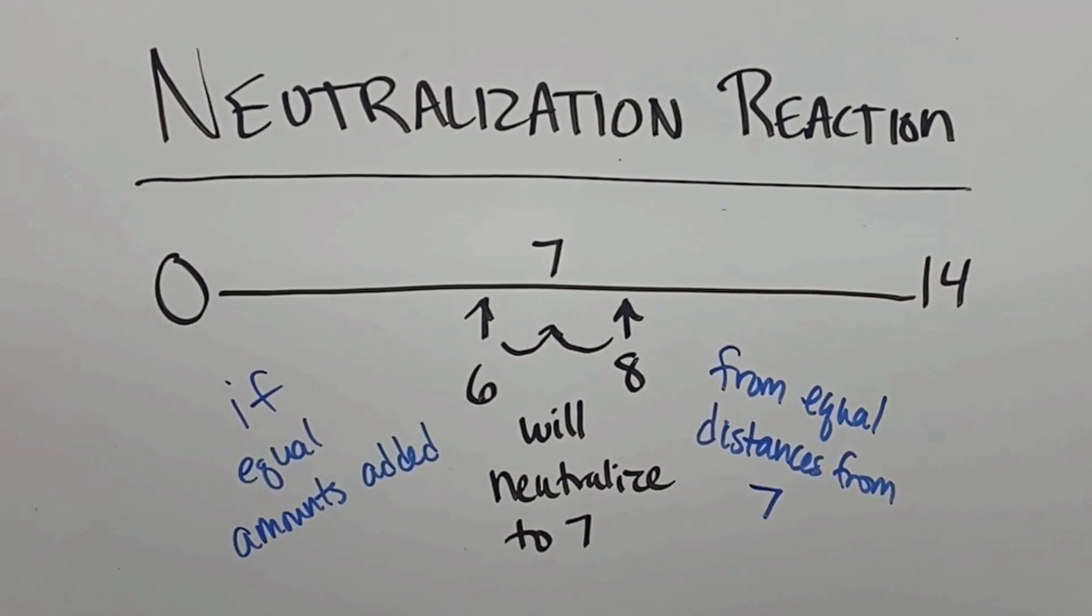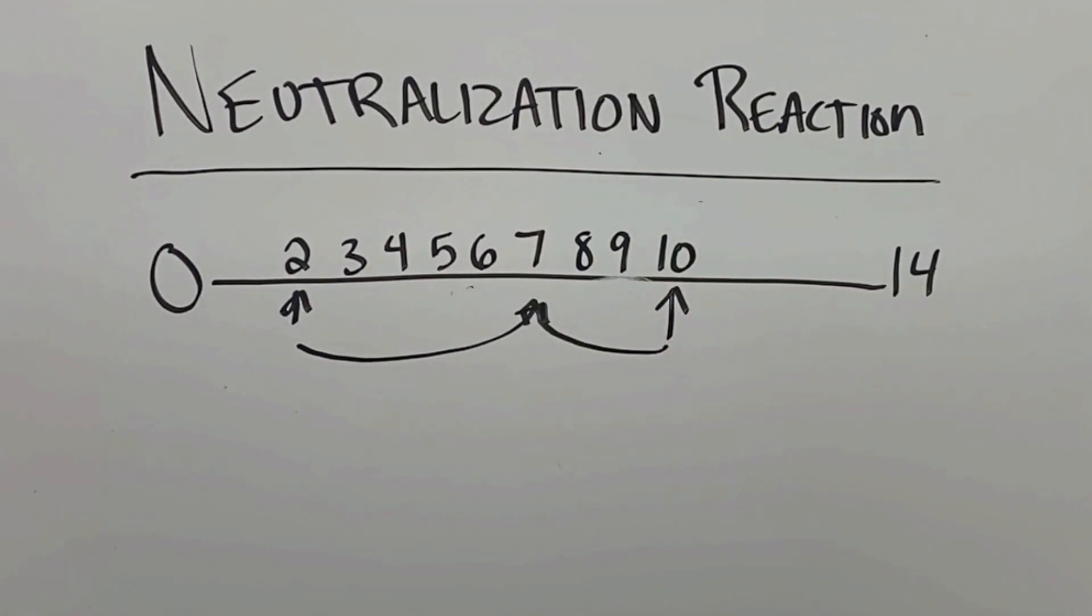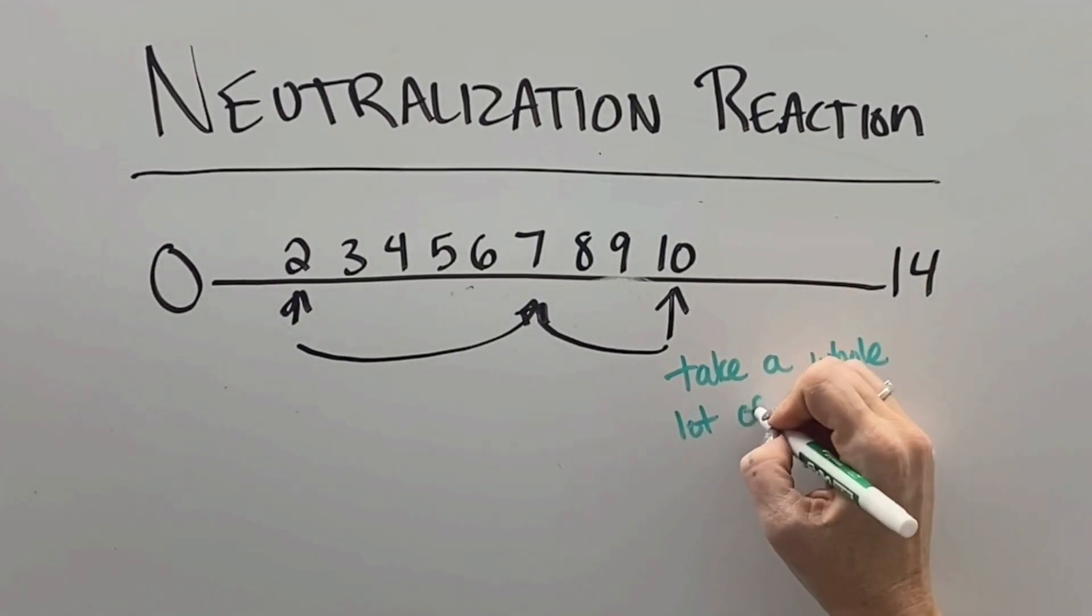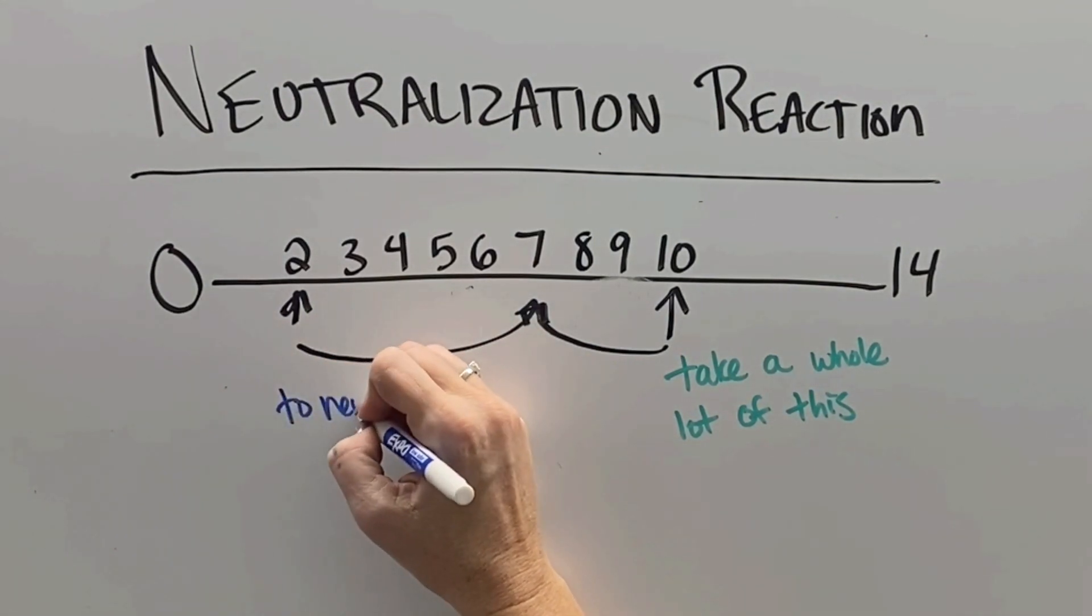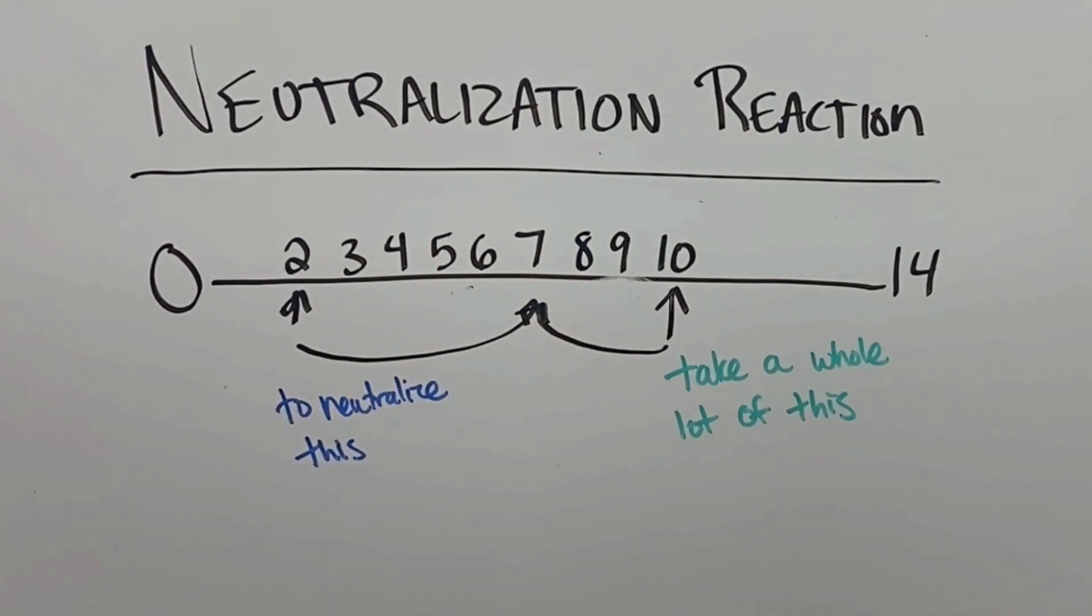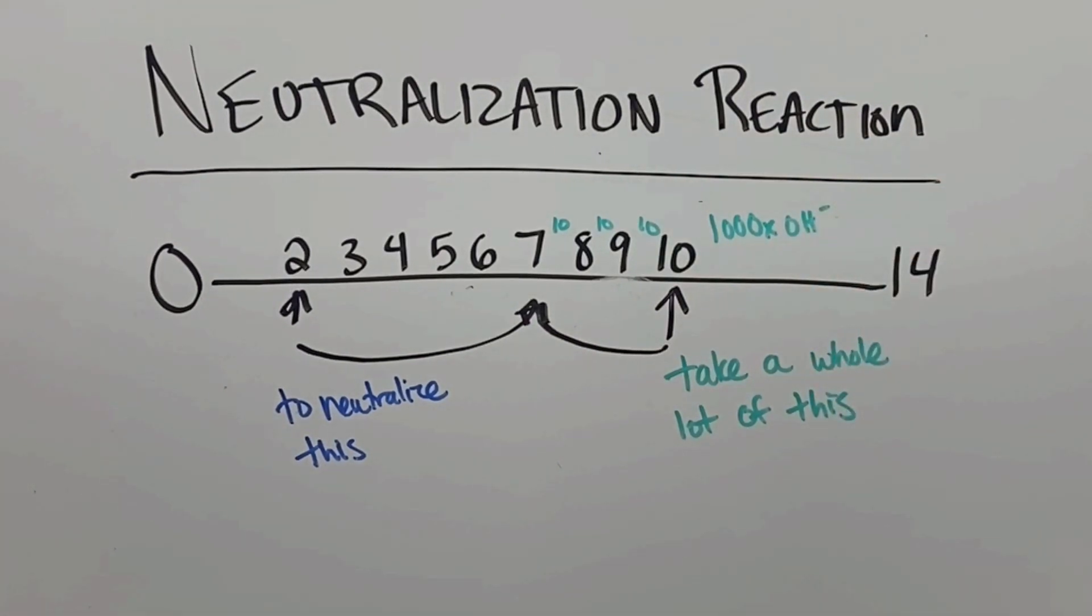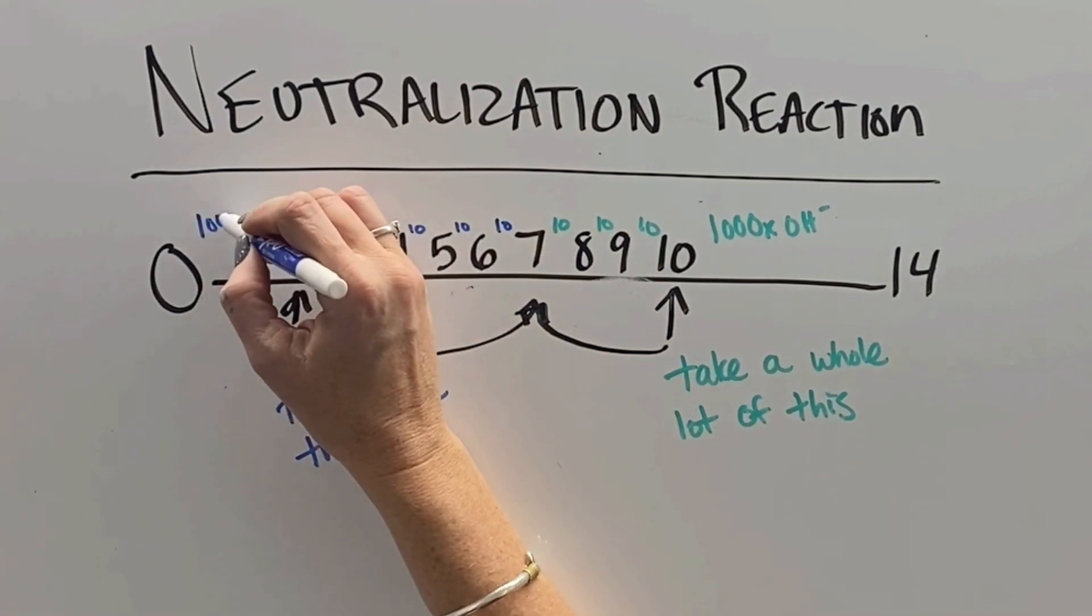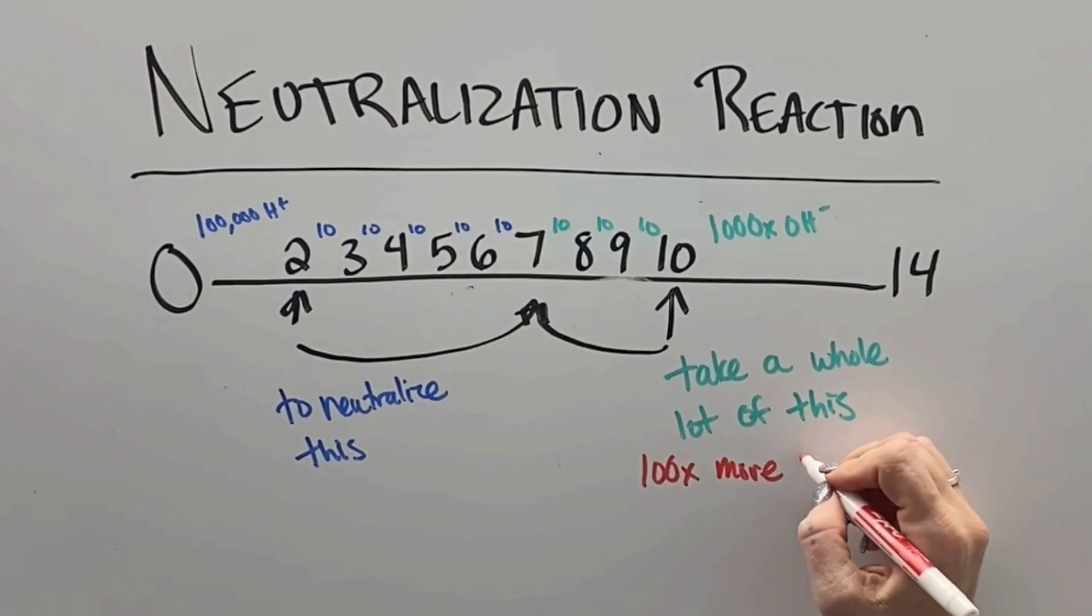Things get trickier if you're looking at substances that are different strengths or different distances from 7. If we're looking at a base with a pH of 10 trying to neutralize an acid with a pH of 2, that 2 is actually 100 times stronger than the 10, because every step away from 7 is 10 times stronger since the scale is logarithmic. You'll need either a larger concentration of the base with a pH of 10, or a larger amount of it to neutralize the acid with a pH of 2.